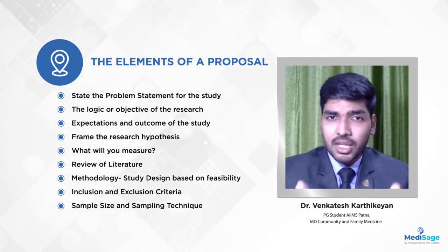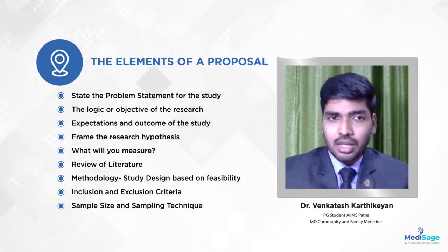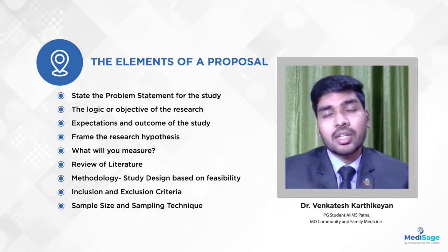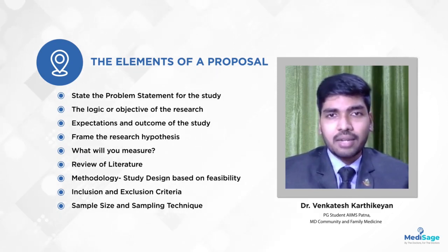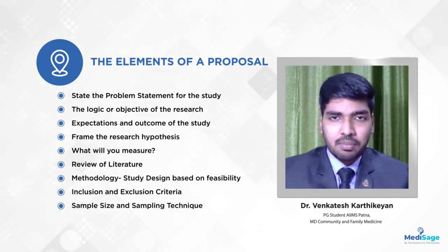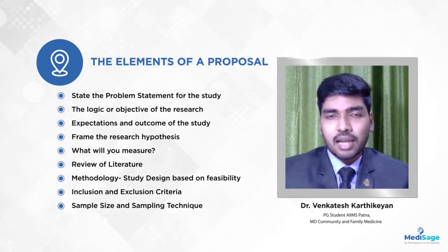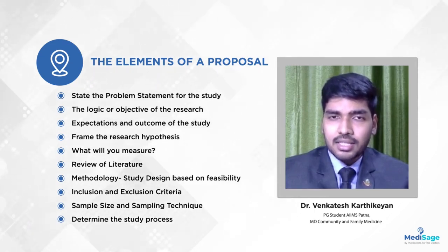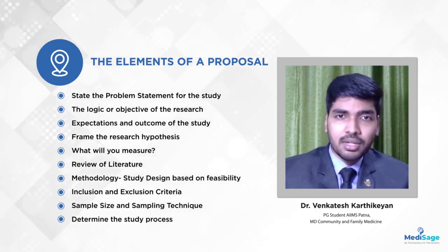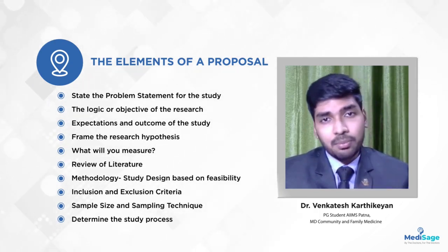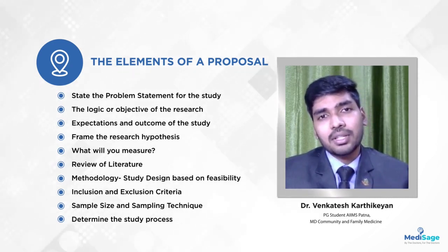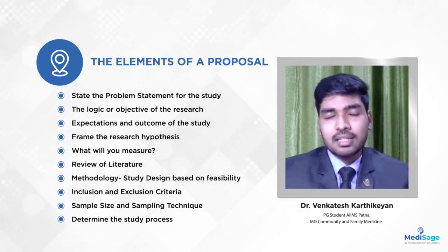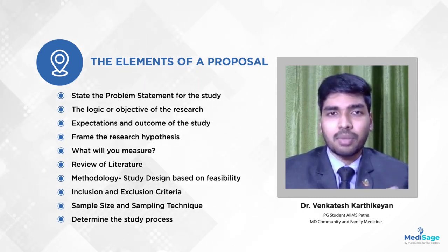You should have a clear idea about your sampling method from the beginning. For sample size calculations, you cannot collect data from all diabetic patients in Patna — you need a limited sample size due to feasibility, manpower, and budget constraints. You can take the help of statisticians in your department for these calculations. This is a very important step because you cannot determine sample size in the middle of your study — it should be well planned at the stage of conception of the proposal itself.